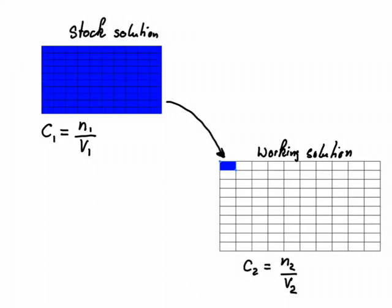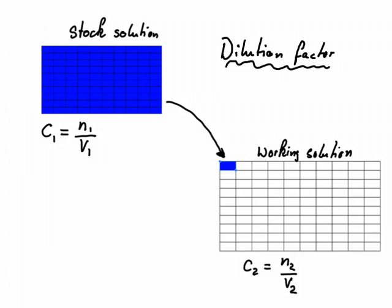Now we need to think about how do we go from our stock solution to the working solution — how are we going to actually achieve this? Very often what we can use is what is called a dilution factor. It's really important to understand that a dilution factor has no unit; it is simply a ratio. For example, it could be like an instruction: make a one-in-100 dilution.